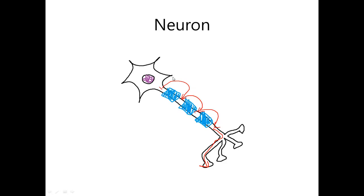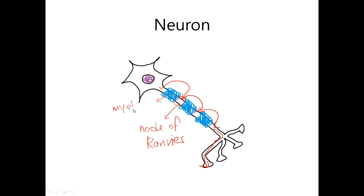The mechanism of jumping is not that complicated, but I will explain it later when I explain membrane potential and action potential in future lectures. And the part that is not myelinated — the part where the myelin sheath is not present — is called the node of Ranvier. So this is the myelin sheath, and this is the node of Ranvier.